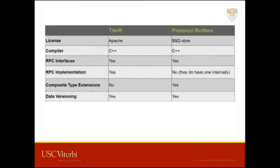Both compilers are written in C++. Thrift is Apache-licensed and Protobuf is BSD-licensed — both very liberal licenses. Thrift includes the RPC implementation, generating server-side and client-side code so you can invoke a remote procedure on another server. Protobuf does not have one in its framework, though it's reported that Google uses one internally. Protobuf has composite type extensions, and both are versioned.